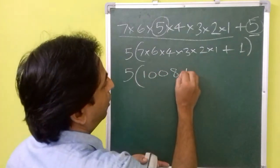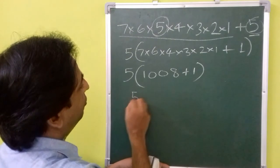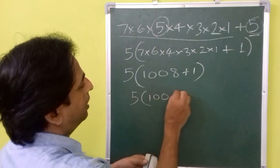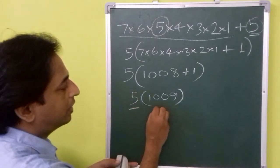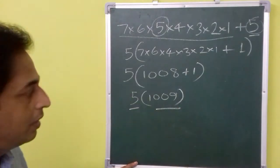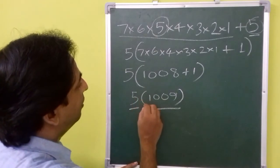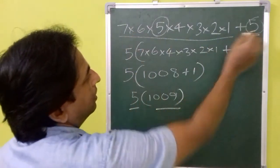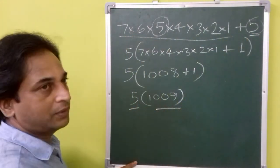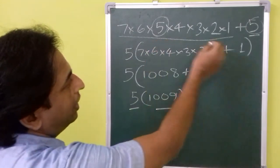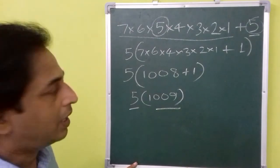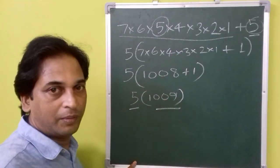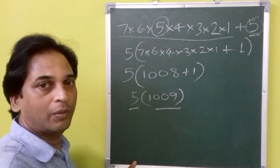So 5 into 1008 plus 1, that's 1009. So 5 is a prime number and 1009 is also a prime number. If we express this as a product of primes, that means any number can be expressed as a product of primes, then this is a composite number as per the fundamental theorem of arithmetic.